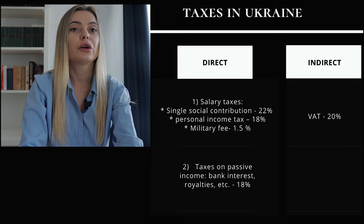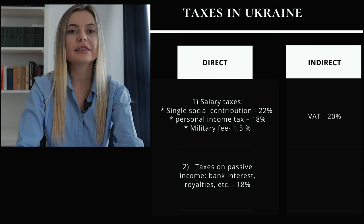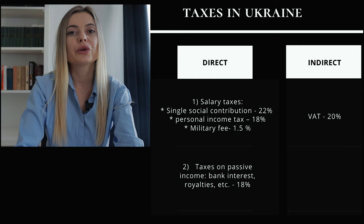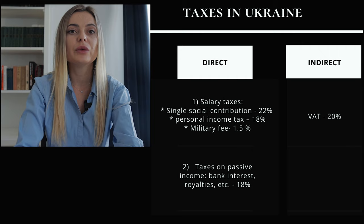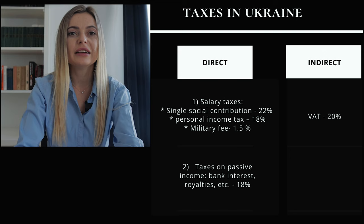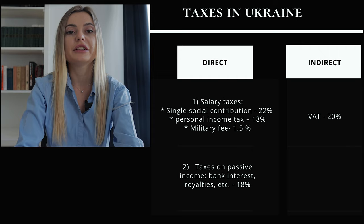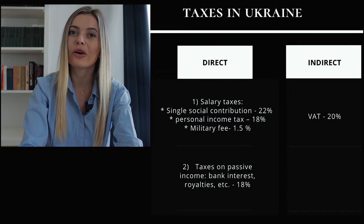The passive income tax rate is also 18%. The military fee is a temporary tax that was introduced to finance the needs of the armed forces of Ukraine during the anti-terrorist operation in connection with Russian aggression to the territory of Ukraine. Now it is linked with personal income tax — that is, any income that a person receives, they pay 18% personal income tax plus 1.5% military fee. All Ukrainians and people who live here or visit without exception pay them, sometimes without even knowing it.